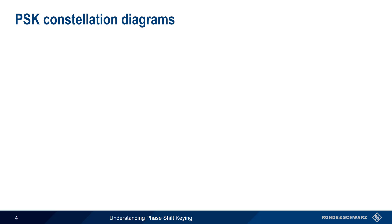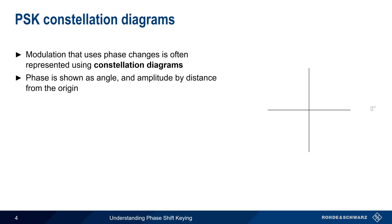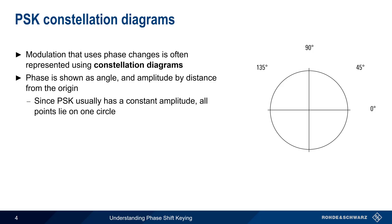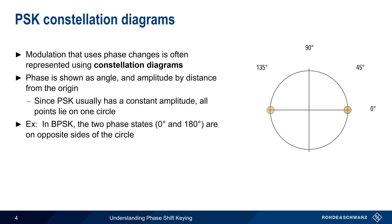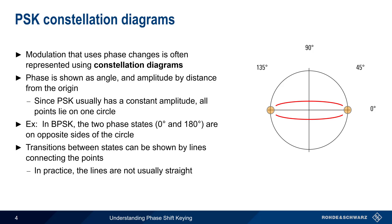Rather than look at phase changes over time, as we did on the previous slide, constellation diagrams are often used to represent signals that have phase changes. In constellation diagrams, phase is represented by an angle, and amplitude is represented by a distance from the origin. Since PSK signals normally have constant amplitude, all of the points will lie on one circle. For example, in BPSK, there are two phase states — 0 and 180 degrees — and these would be shown the same distance from the origin but on opposite sides of the circle. Transitions between states are shown as lines connecting the points. Note, however, that in practice these lines are usually not completely straight.